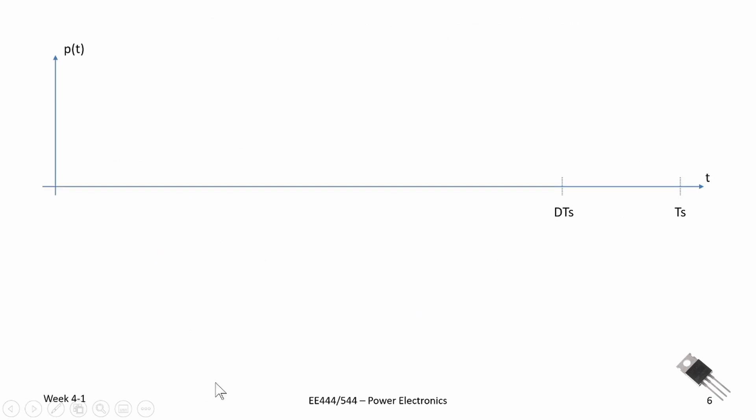Now we can plot this for the buck converter, and I'm going to exaggerate the scales slightly. There's our turn-on switching loss. It has a peak value of VN times IO for the buck converter. Here's our conduction loss. And again, our scales are highly exaggerated in time. Typically, we're going to see switching periods that would be on the order of milliseconds to microseconds, and turn-on and turn-off times that are on the order of tens of nanoseconds to hundreds of nanoseconds.